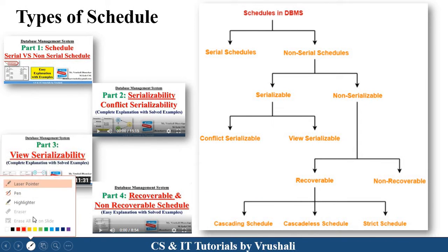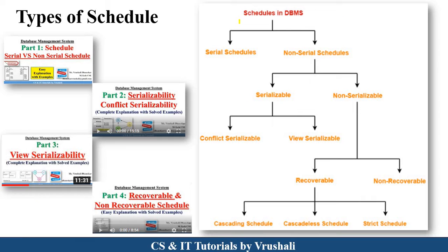The first point is: what exactly is a schedule? Schedule means a collection of transactions in DBMS. A schedule can be divided into two parts: serial and non-serial schedule. Non-serial schedule can be divided into two parts: serializable and non-serializable. Serializable schedule is again divided into two parts: conflict serializable and view serializable. We already discussed serializable and conflict serializable in part two, and view serializable in part three.